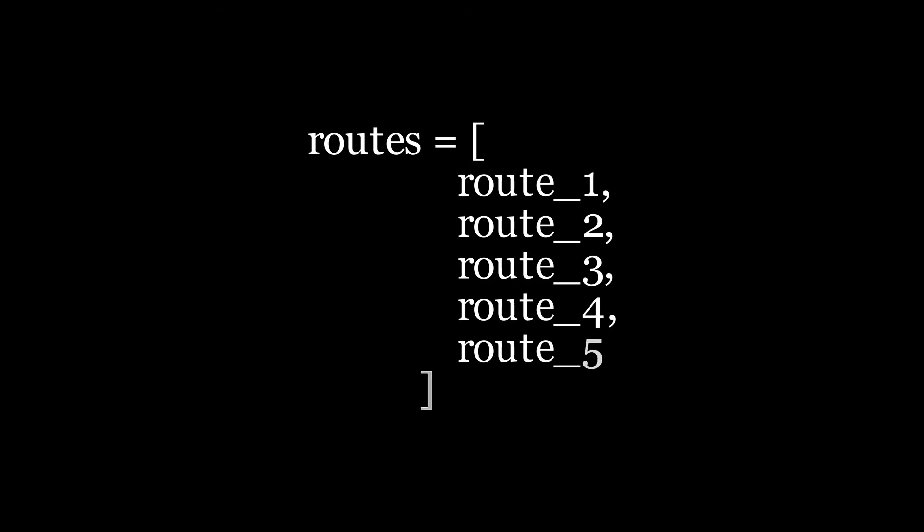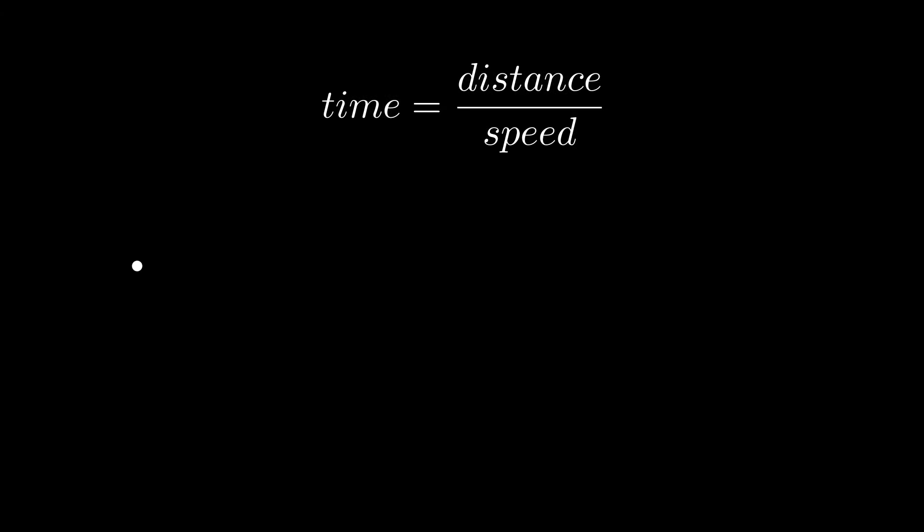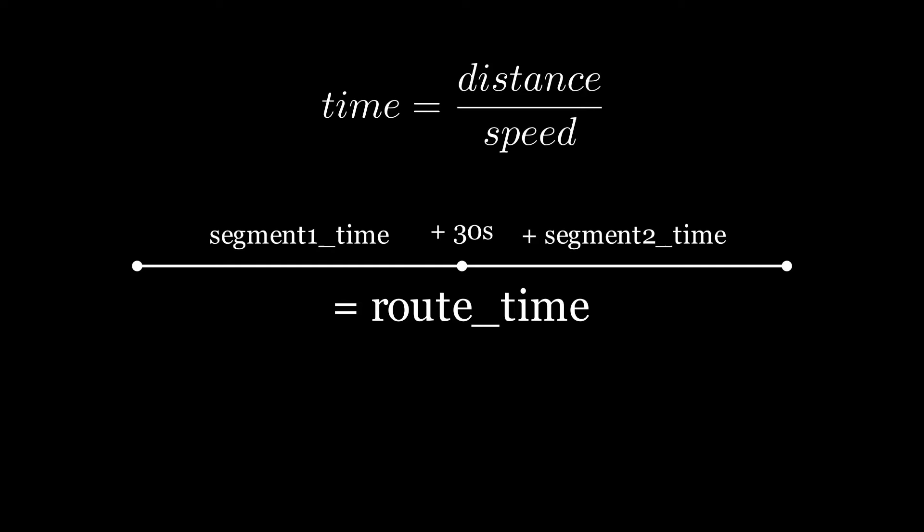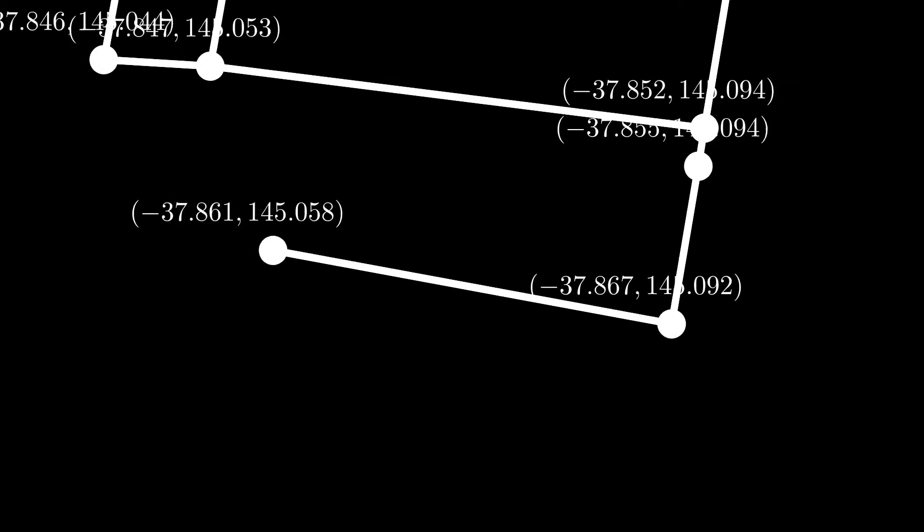The cost of the routes was evaluated based on the amount of time taken to travel along a route. This was calculated using the formula time equals distance over speed, with an added 30 seconds for each intersection travelled through. Each SCATS site has an associated longitude and latitude coordinate, so library GeoPy is used to calculate the distance between coordinates.